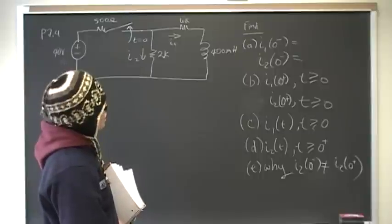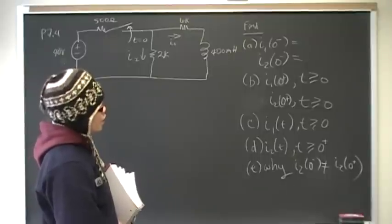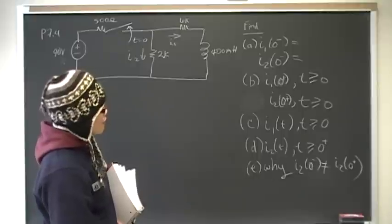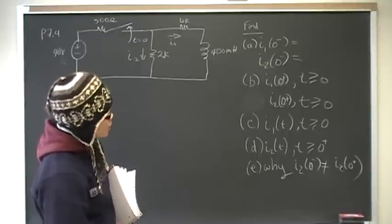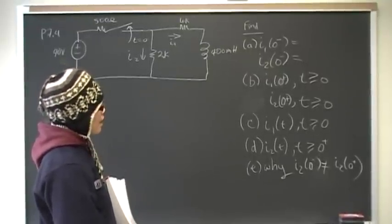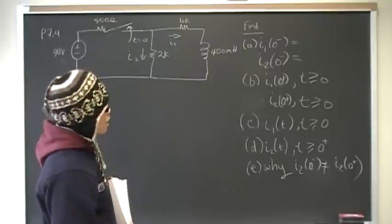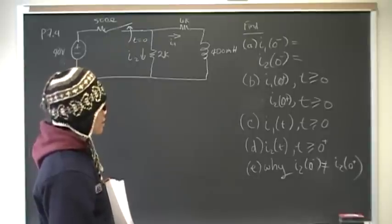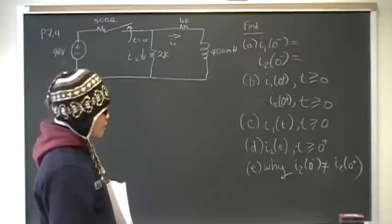In part A, the switch is closed. In part C, we're looking for the general equation for the branch current through the inductor after the switch for time greater than zero. In part D, we're looking for the branch current equation through the 2 kilohm resistor right after the switch opens, and we want to know why the current through the 2 kilohm resistor is not the same right before and right after the switching.